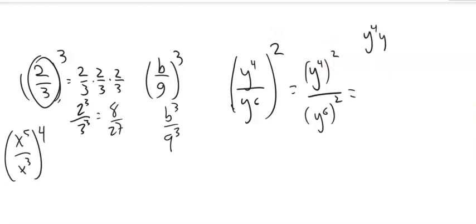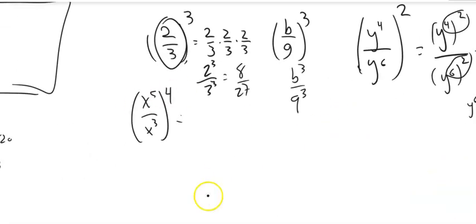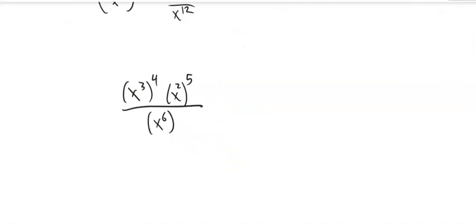Y to the 6th squared, Y to the 6th times Y to the 6th is Y to the 12th. Notice what we did. When we have a power to a power, we could multiply them. Similarly, this one would be X to the 20th over X to the 12th. We'll take it to the 4th power, 5 times 4, 3 times 4.